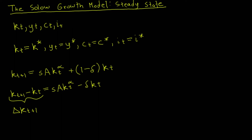Conveniently, this equation only involves capital per capita, so we don't need to solve for GDP, consumption, or investment per capita yet. In a steady state, K_T equals K star for all T, so K_{T+1} minus K_T equals zero. Plugging K star into the right-hand side gives us one equation and one unknown: K star.